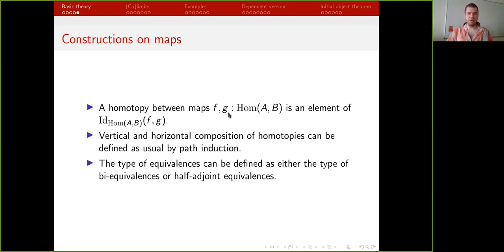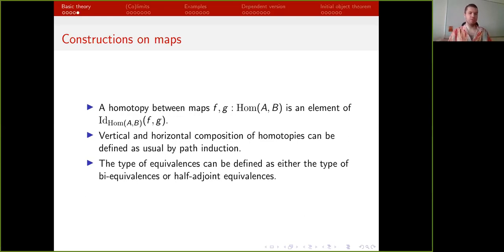This is enough to give us higher structure, because these base hom types are already spaces, so we can talk about homotopies. For example, if we have a pair of maps f and g, we can define the type of homotopies between them as an ordinary base identity type. We have all the ordinary structure at the base level — identity types — and we can define vertical and horizontal compositions satisfying associativity. We can also define equivalences and prove all the usual properties the same way as in ordinary HoTT, just keeping attention to which types are indexed.